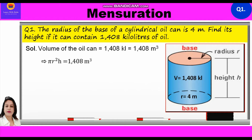This implies pi r square h is equal to 1408 meter cube. Now, we shall substitute the values. Pi will be equal to 22 by 7, r is 4 meters, and h we have to find. Accordingly, we will write 22 by 7 into 4 square into h is equal to 1408.